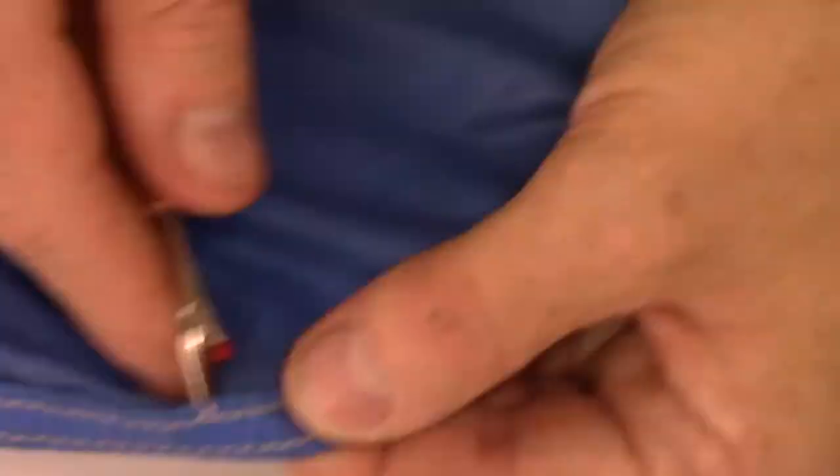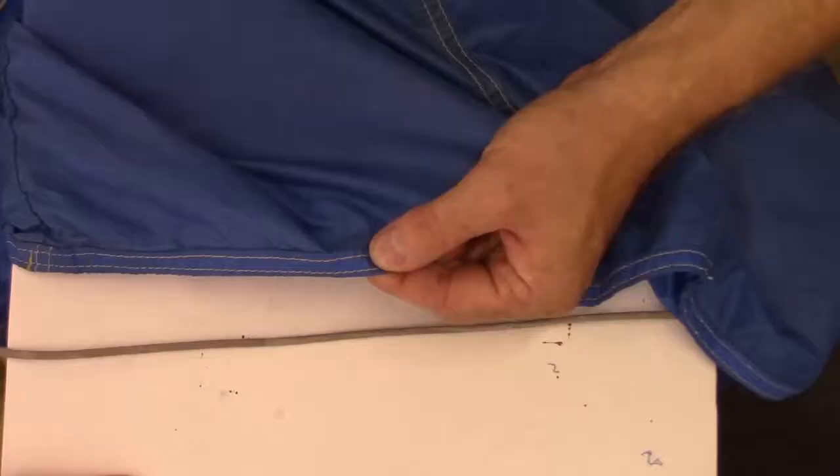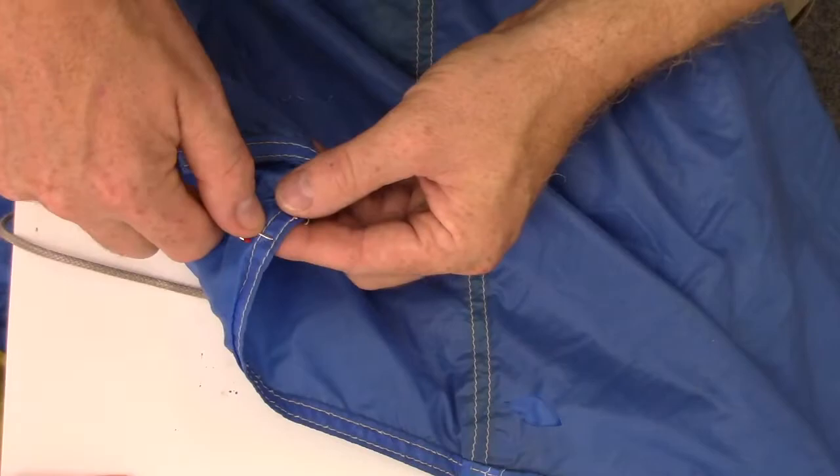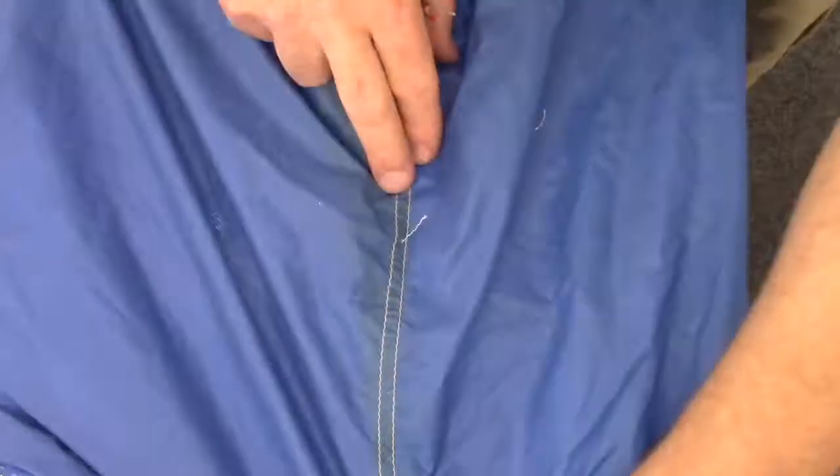Now start unpicking the tail seam about 12 inches either side of the rib seam. Here I'm using a technique of breaking about every fifth stitch. Once I've got them all broken I'll go to the other side and break just the stitch at either end and then pull the thread. That should break the whole seam open.